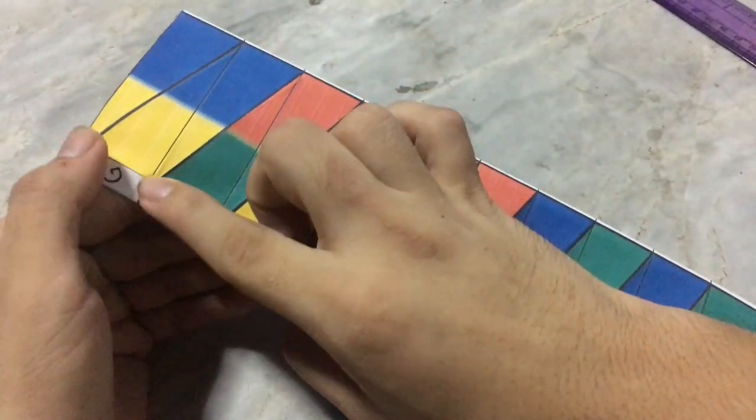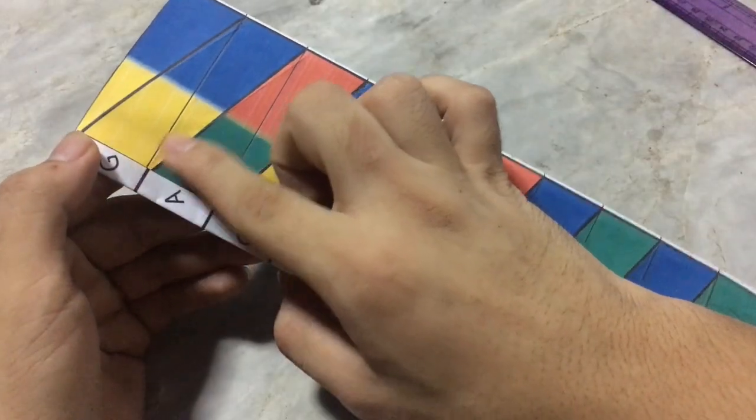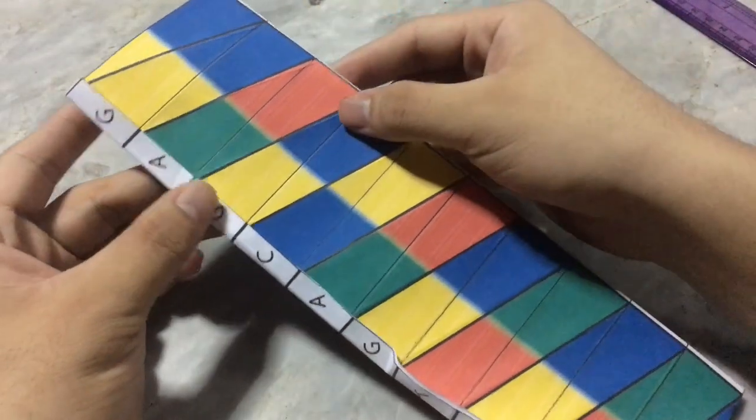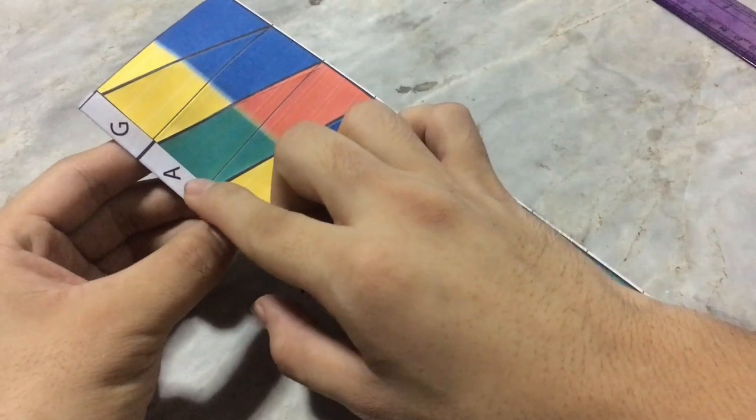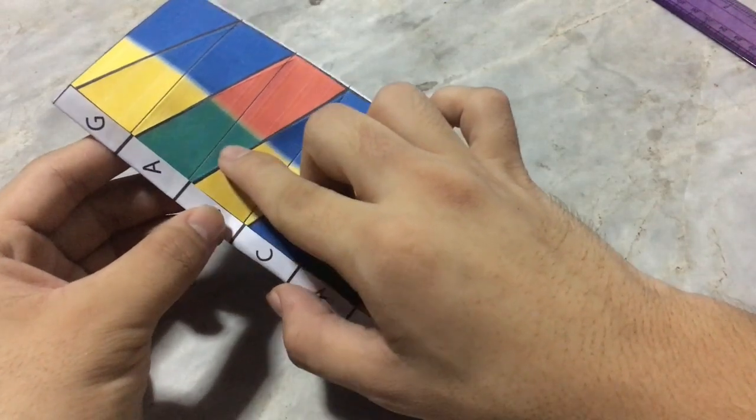When it is guanine, the color is yellow. When it is adenine, the color is green.